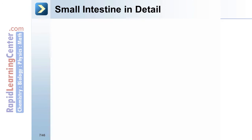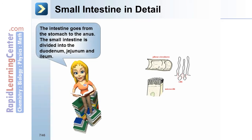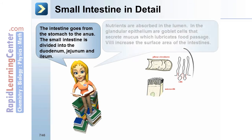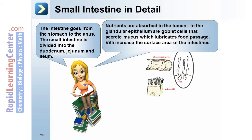Small intestine in detail: the intestine goes from the stomach to the anus. The small intestine is divided into the duodenum, jejunum, and ileum. Nutrients are absorbed in the lumen. In the glandular epithelium are goblet cells that secrete mucus, which lubricates food passage. Villi increase the surface area of the intestine.